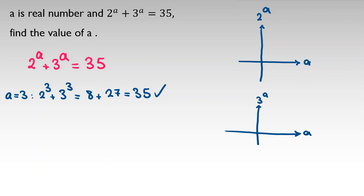These functions will be something like this: they approach 0 when a goes to negative infinity, and at a=0 they equal 1. Both 2^a and 3^a have similar exponential shapes.